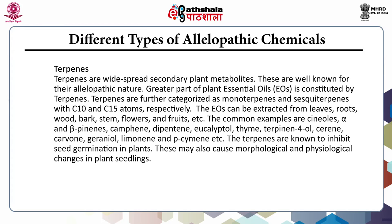Coming to the next class: terpenes. The greater part of essential oils is constituted by terpenes, categorized as monoterpenes with 10 carbon atoms and sesquiterpenes with 15 carbon atoms. Essential oils can be extracted from leaves, roots, wood, bark, stem, flowers and fruits. Examples include sinuols, alpha and beta pinene, camphene, dipentene, eucalyptol, thymol, terpenes, limonene, etc. They inhibit seed germination in plants and may also cause morphological and physiological changes in plant seedlings.